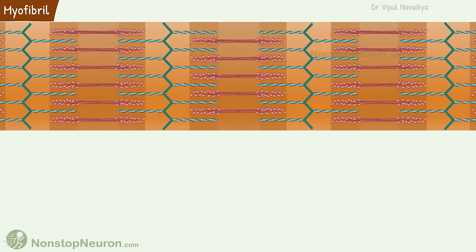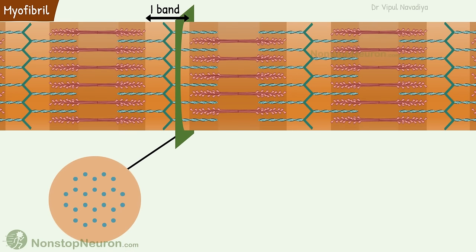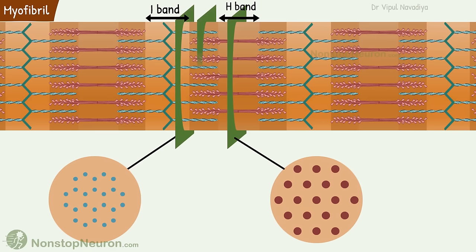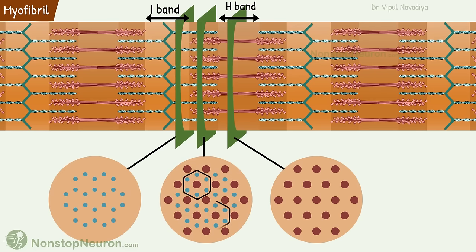So this is how a myofibril looks from the side. Now let's take a look at the cut section — it will help you understand the three-dimensional arrangement of filaments. At the I band, we have only thin filaments arranged as seen in a cut section; each circle here is a thin filament. At the H band, there are only thick filaments. The portion of the A band where thin and thick filaments overlap shows each thick filament surrounded by six thin filaments. Understanding this arrangement is enough to understand the physiology of muscle contraction.